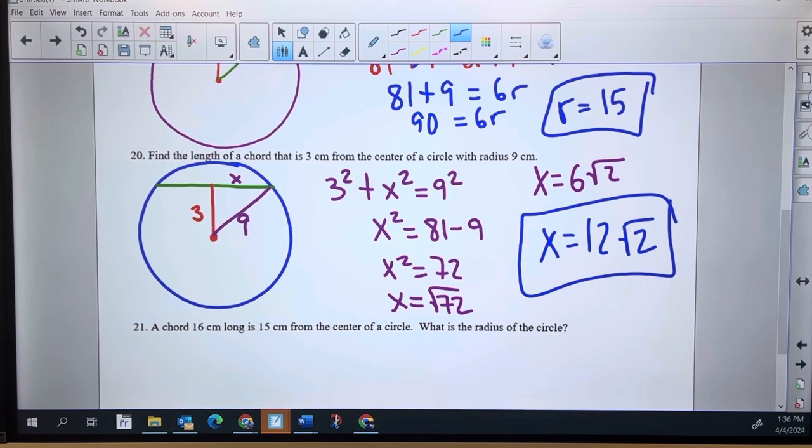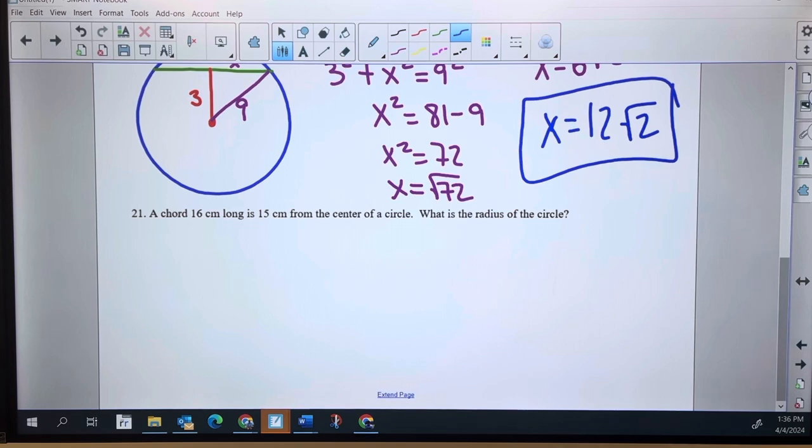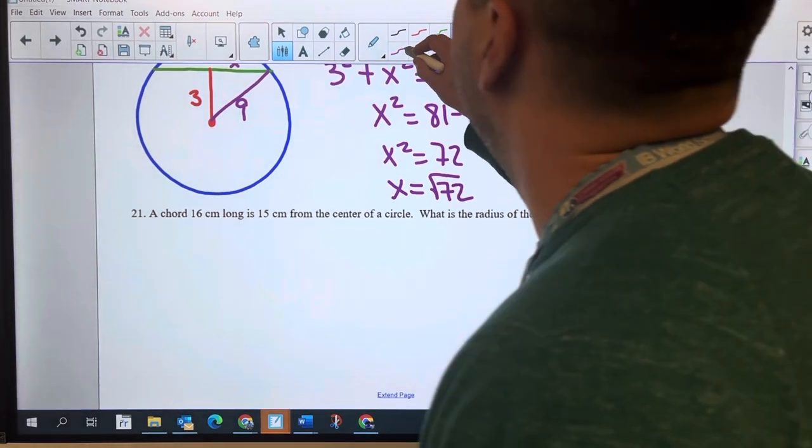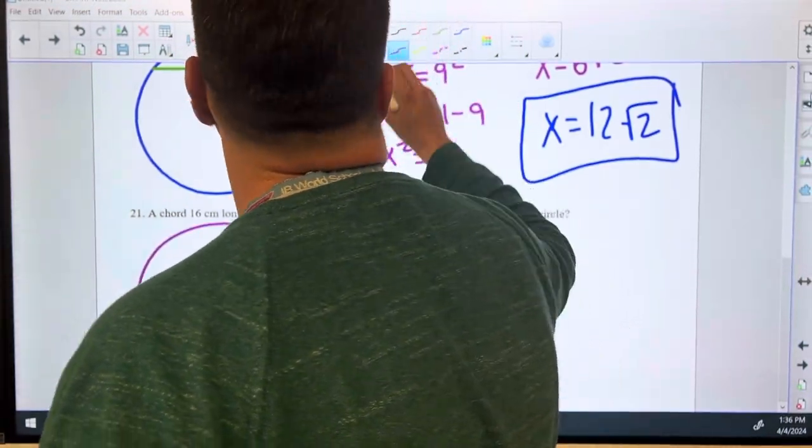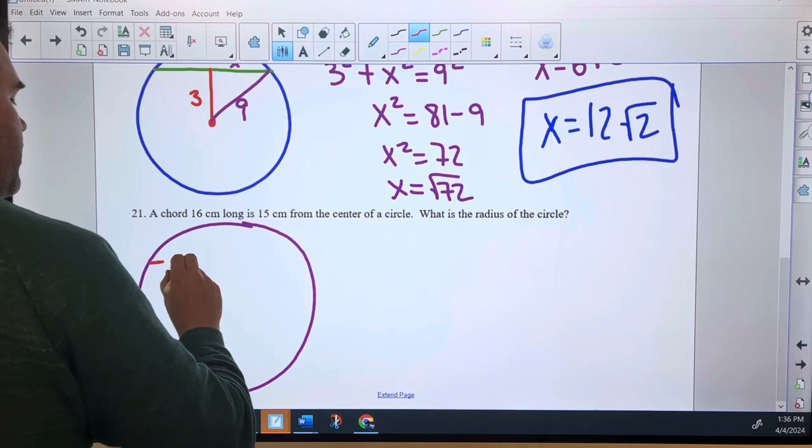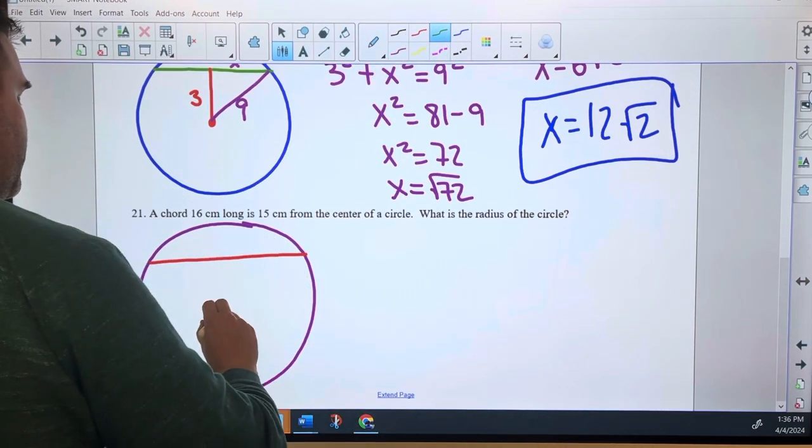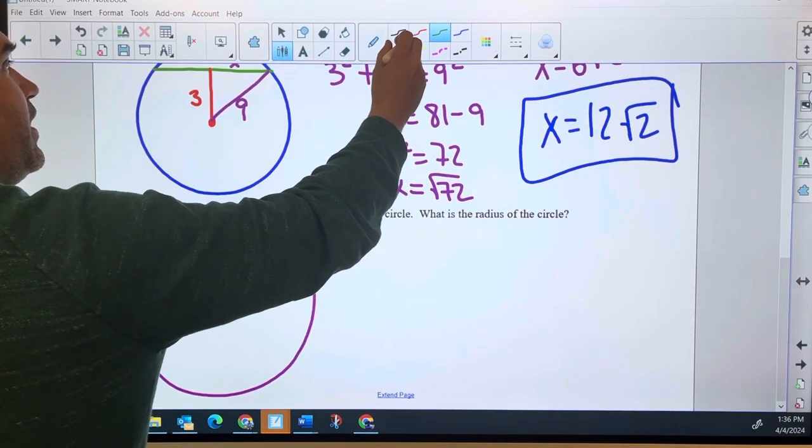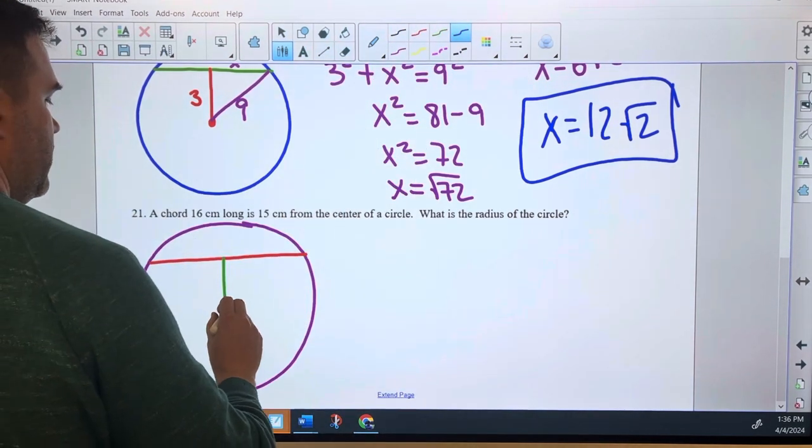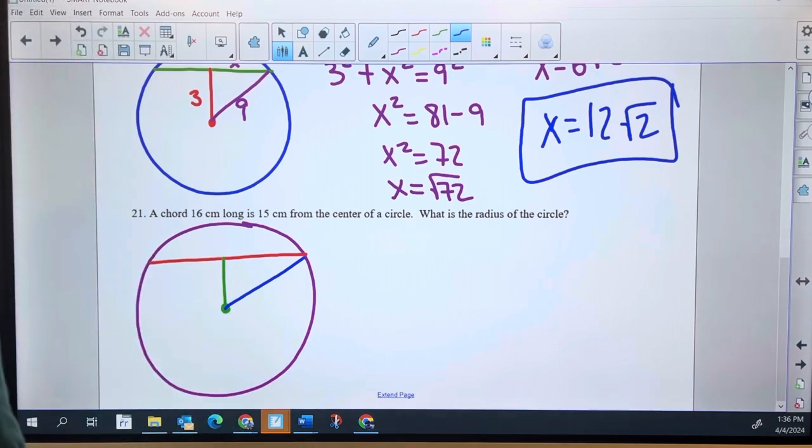21. The chord is 16 centimeters long, 15 centimeters from the center. Same picture, right? So I'm going to draw the picture. There's the circle. There's the chord. There's the distance to the center. And there's the radius.